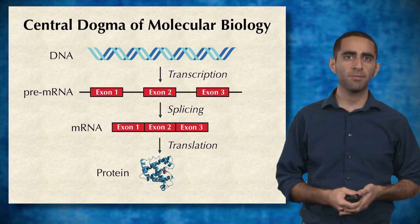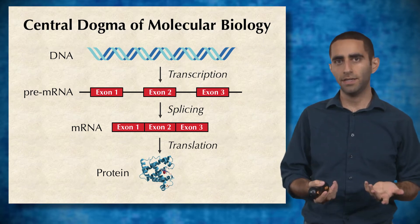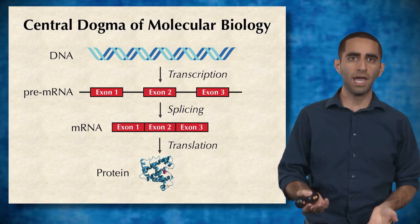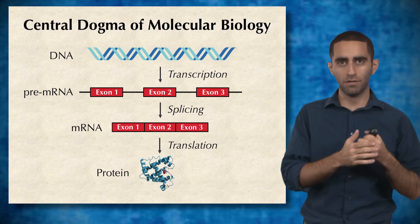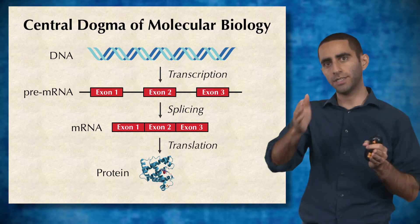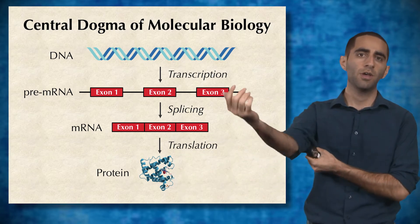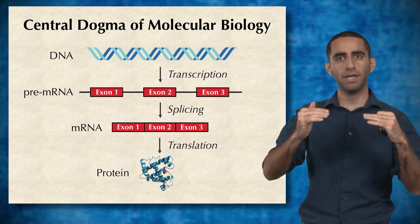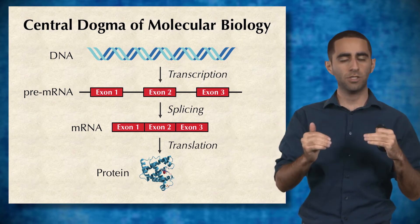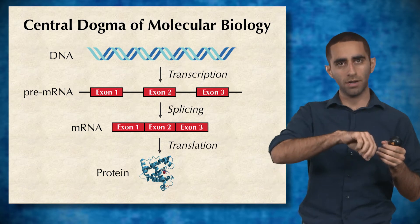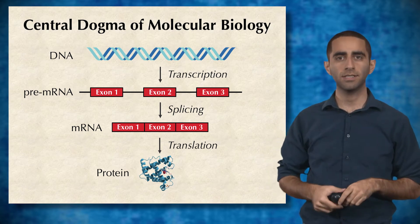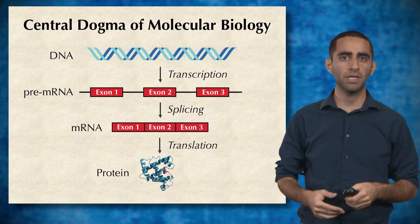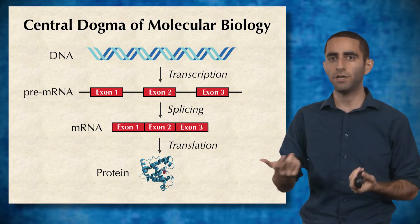Recall from the central dogma of molecular biology that you have DNA, which is the template for all of your genes. DNA is transcribed to what is called pre-mRNA, which is a collection of exons and introns, where these exons are the only things expressed in the actual mRNA. Pre-mRNA is then spliced into regular mRNA, where the introns are cut out from between the exons, and then this mRNA is translated into protein, which is what basically functions in the cell.